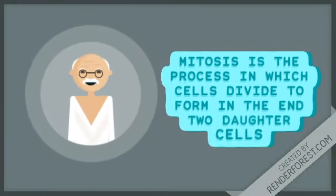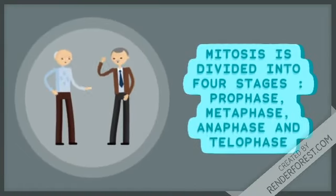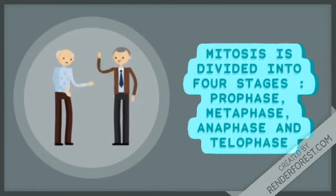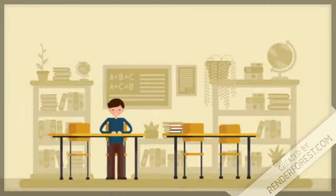Mitosis is a process which cell divide to form in the end two daughter cells. We have four stages of mitosis: prophase, metaphase, anaphase, and telophase. Divided into two stages.